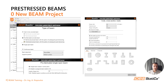We start by creating a new BEAM project and we select the appropriate type of beam we want to model. This will affect the predefined construction stages. As a starting point, we can define basic inputs like spans, loads, or cross-sections, but all of these settings can be changed later.